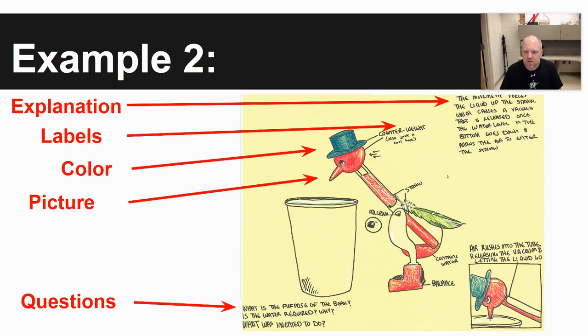labels for what the student thought was a counterweight or a straw or a fulcrum, color to distinguish between different parts or just to make things look nice, picture, and then a zoom-in that you see in the bottom right corner, and then questions that the students have.